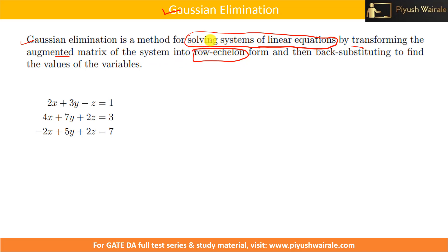In the previous case also, we converted the augmented matrix into row echelon form and calculated the rank of the matrix. Here, we need to find out the values of x, y, z. Once we convert into row echelon form, we back-substitute to find out the values of the variables.